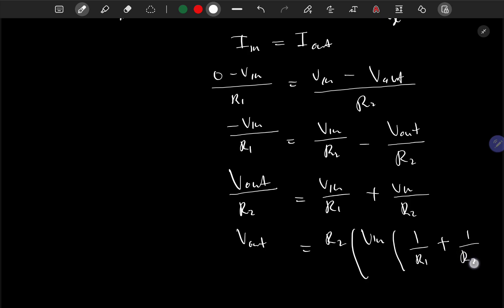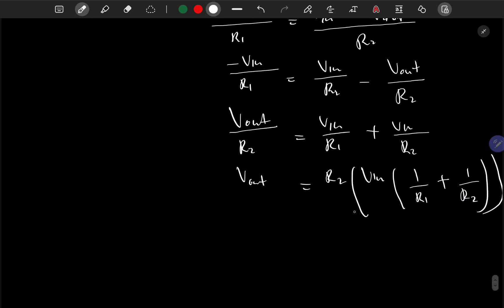Simplifying further, if I give R2 to both terms in the bracket, I'll have R2/R1 plus one, giving the final form Vout = Vin × (R2/R1 + 1).